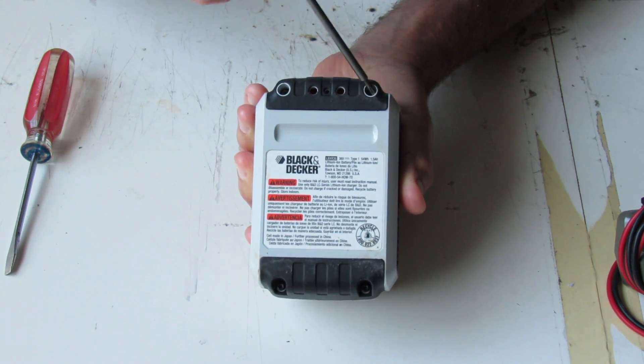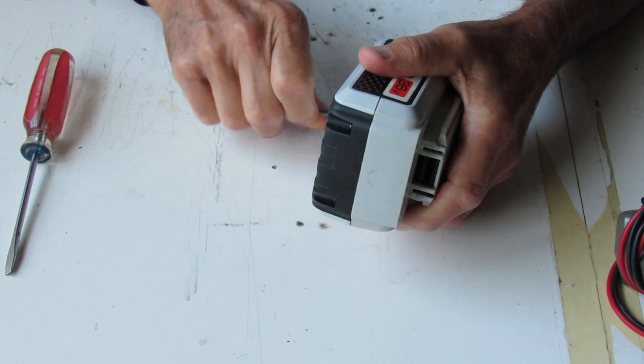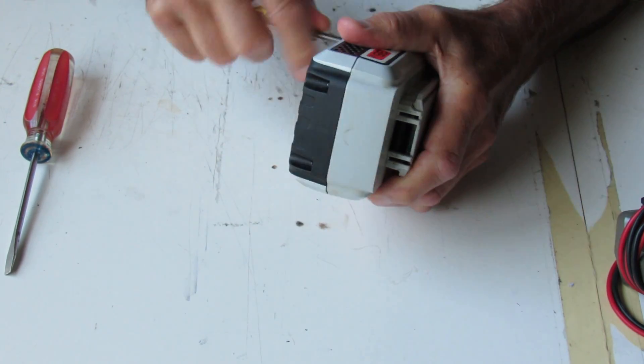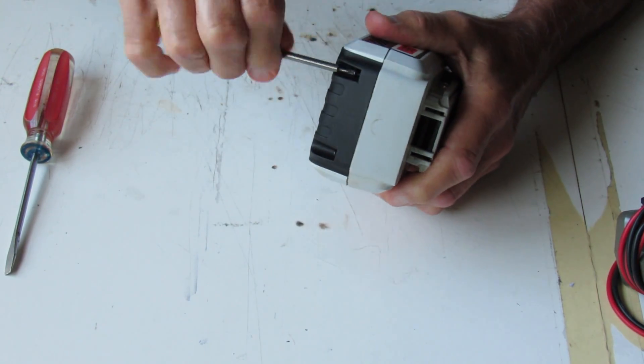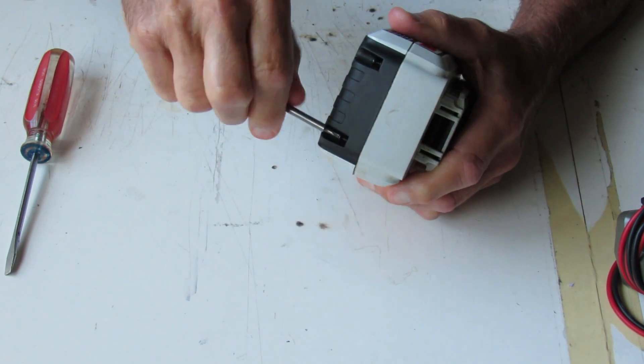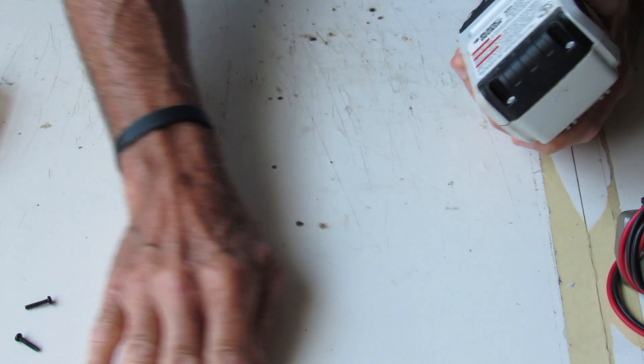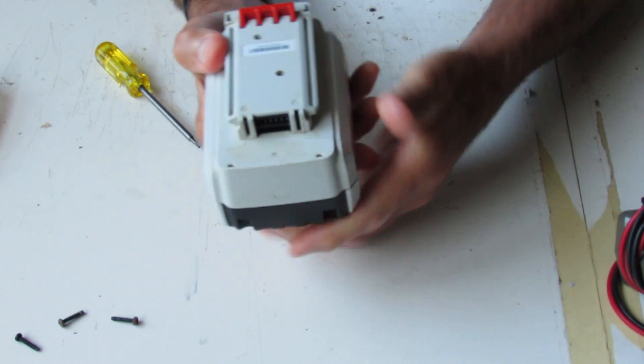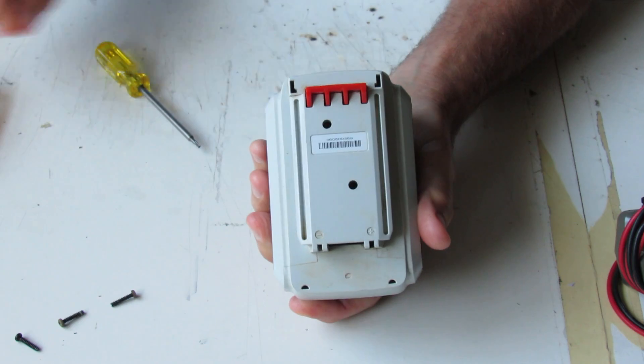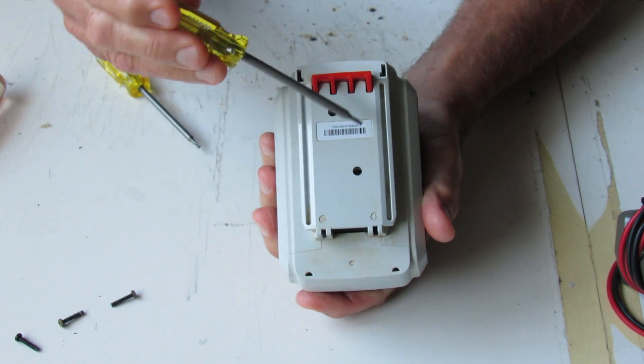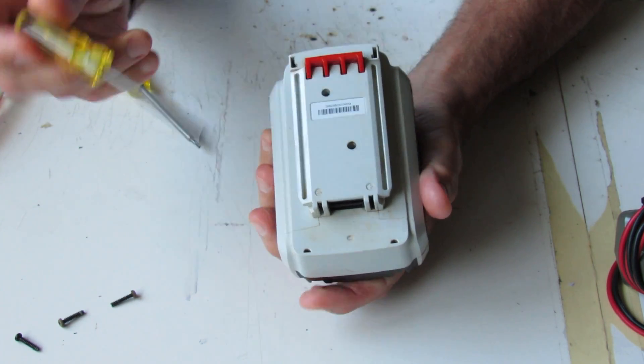I'm going to use a Torx number 10 to remove these four screws on the bottom. Get those out, and now a Torx number 8 to remove the two screws here and here on the top.